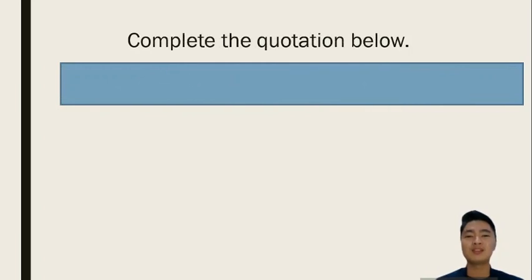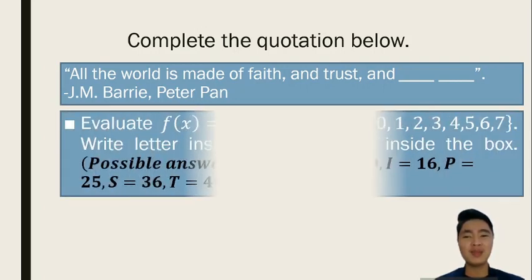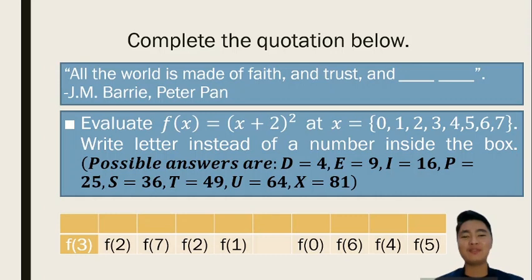Let's try another one. We have here the quotation, All the world is made of faith and trust and blank, blank. We have 2 missing words. How do we solve for it? Remember to use our given function f of x equals x plus 2 quantity squared. Now for this case, we have the values of x from 0 up to 7. But please take note that after solving, you will decode the message. Therefore, each solved value will correspond to a given possible letter which are indicated inside the box. Here are the clues. We have 2 words and the first word is actually 5 letters and the second word is just 4 letters. Now for us to be able to solve for this, we have to do all the letters separately.